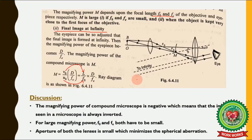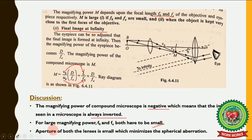Some important discussion points: First, the magnifying power of a compound microscope is negative, which means the image seen in a microscope is always inverted. Second, for large magnifying power, F₀ and Fₑ both have to be small. Third, the aperture of both lenses is small, which minimizes spherical aberration.